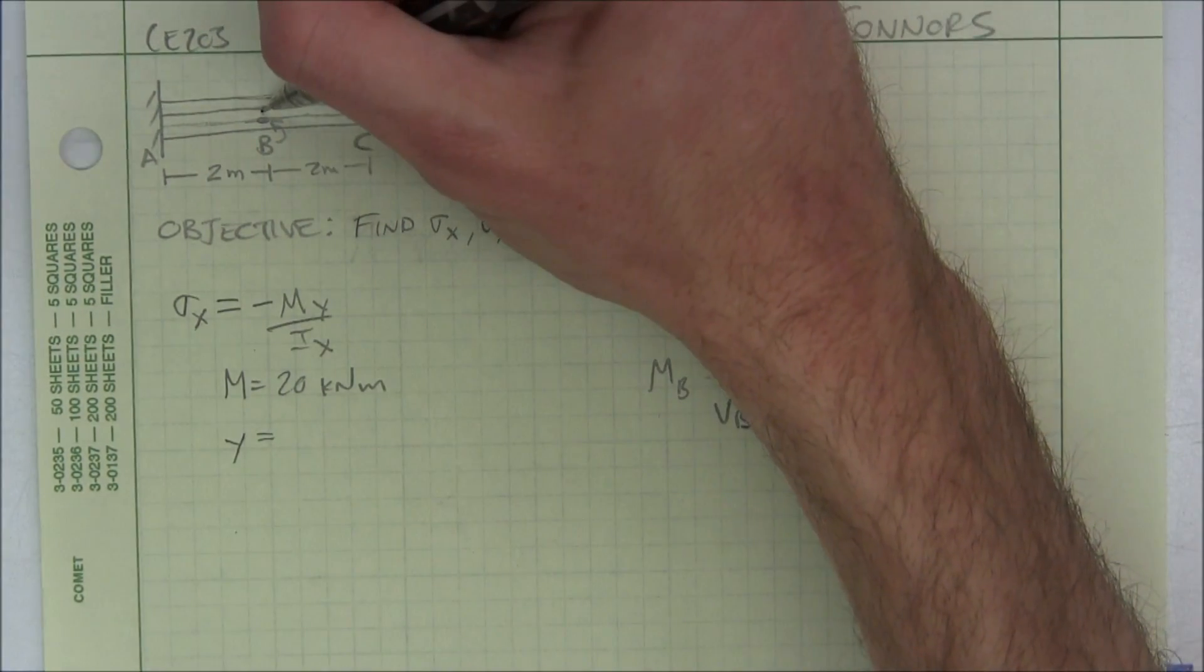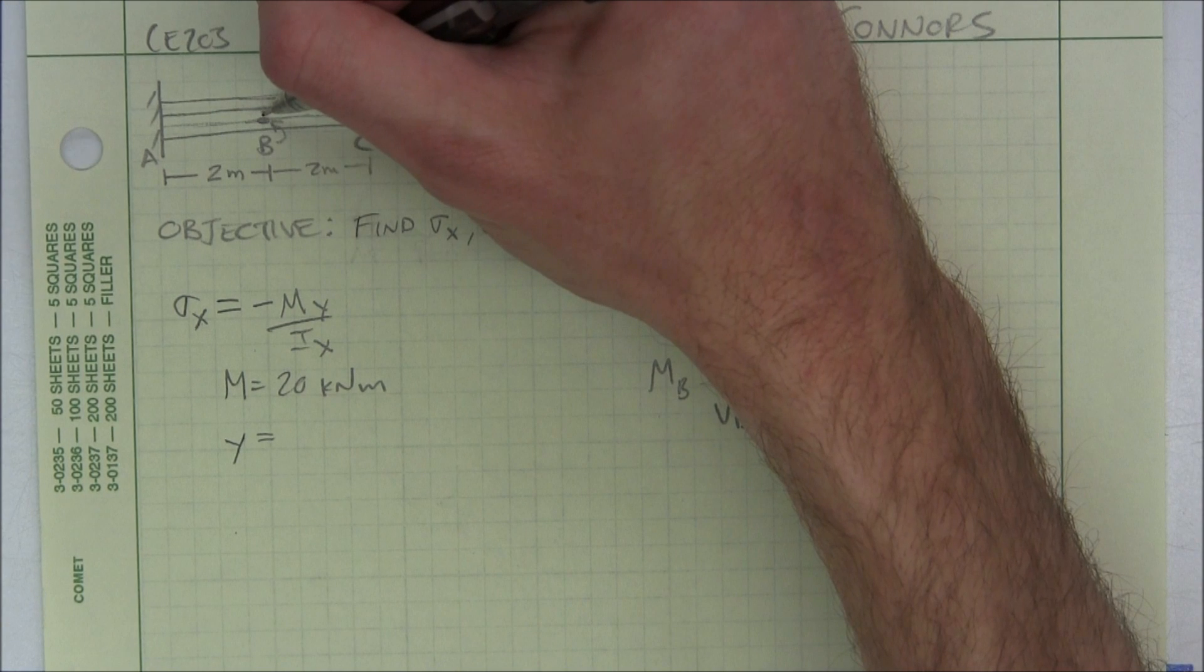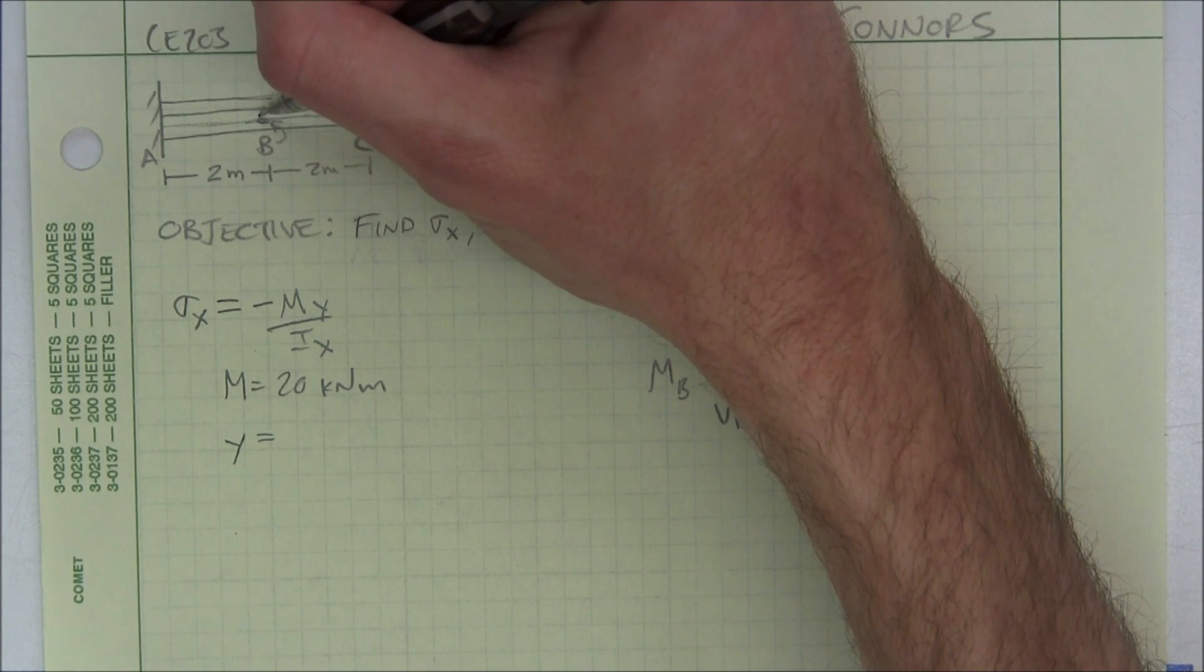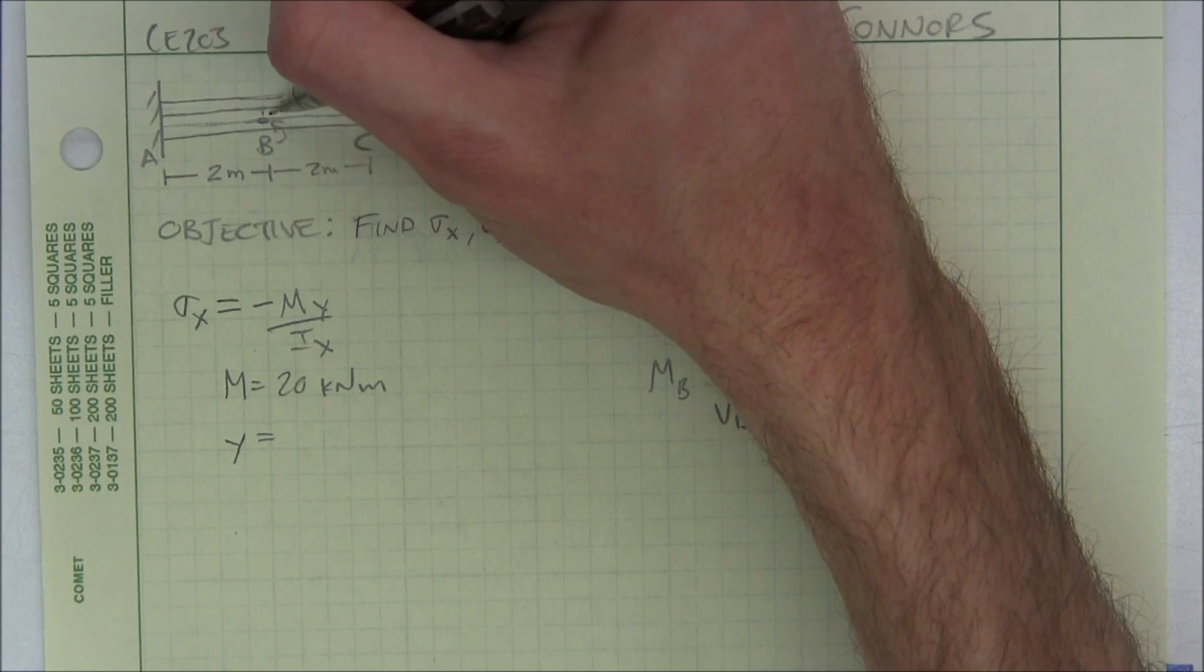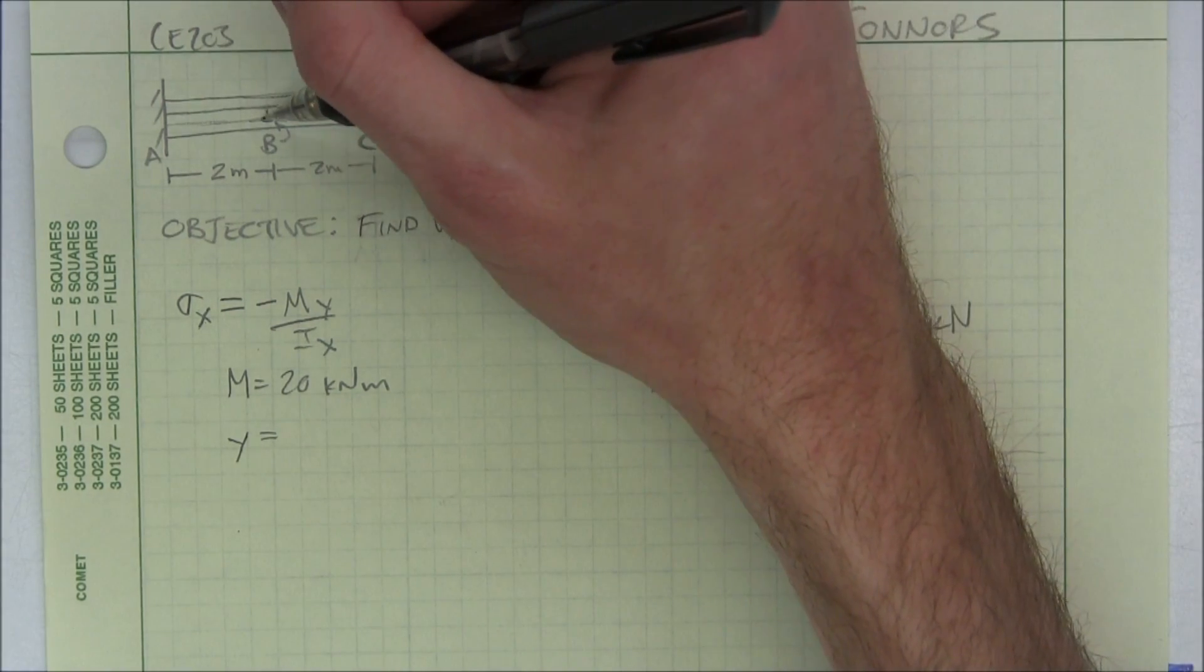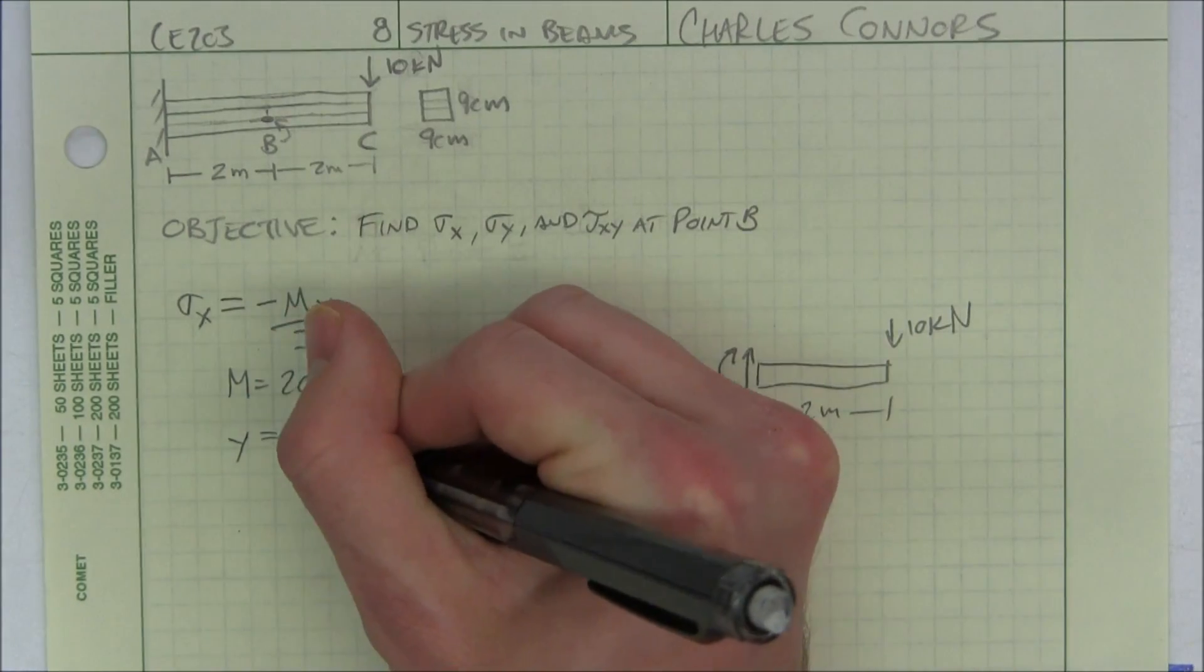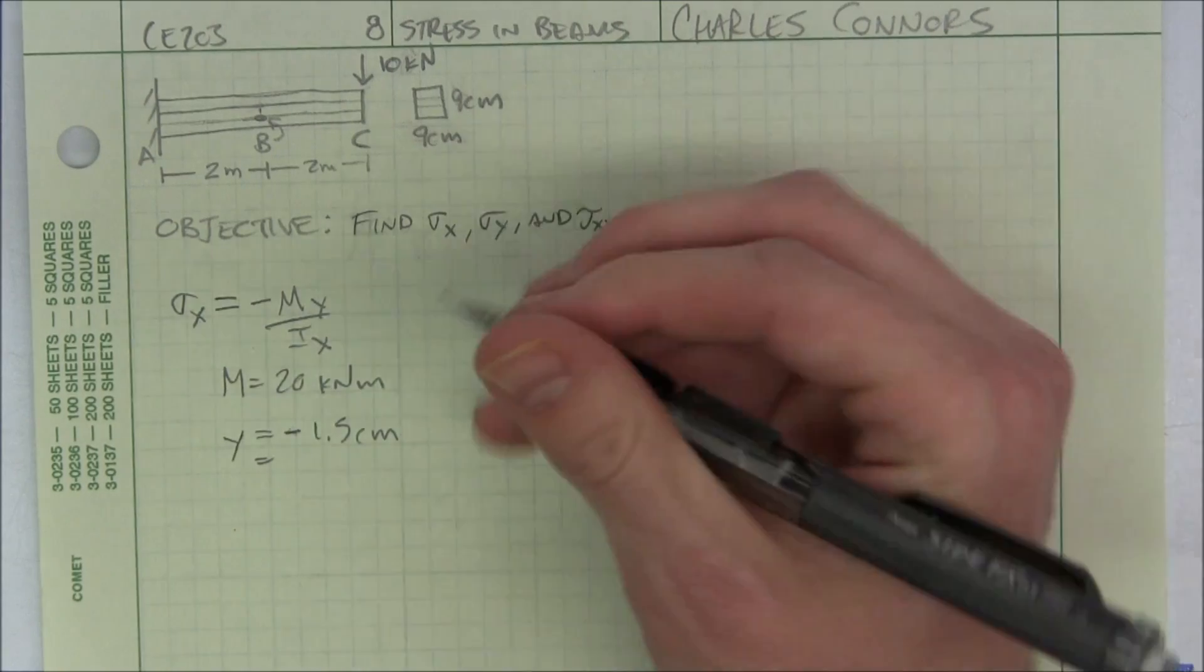Y is measured from the neutral axis, positively upward, to the point of interest. So this is going to be a negative half the distance of, or half the thickness of one of these beams. Each one is 3 centimeters thick. So it's going to be 1 and 1 half centimeters in the negative y direction. And I'll convert that to meters.